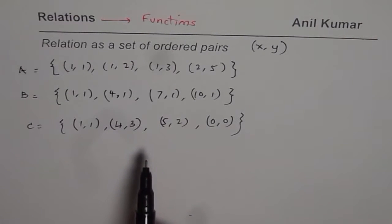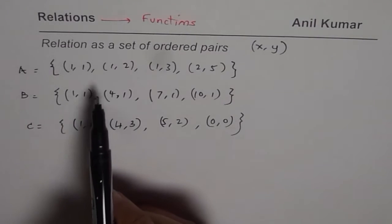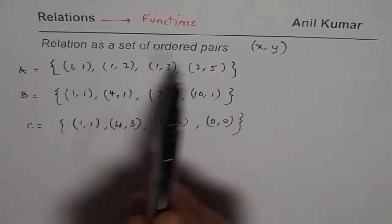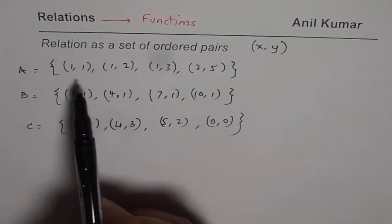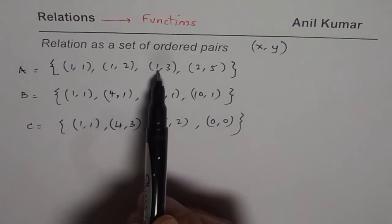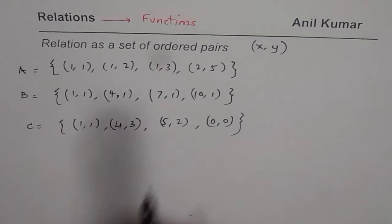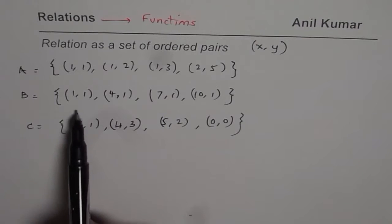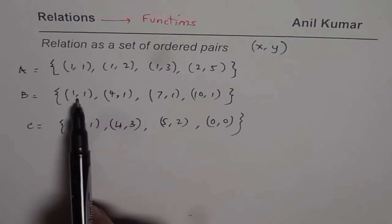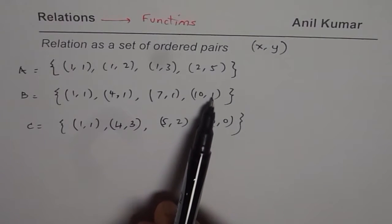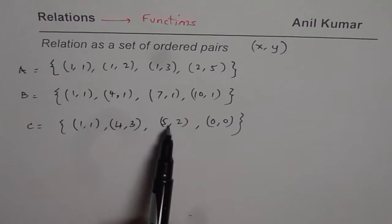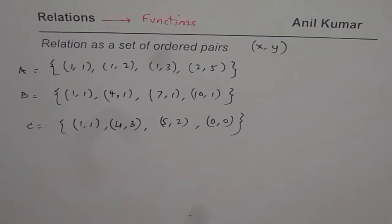Now all three are relations. We note that each element has an x and y — x is linked with y. In the first relation, 1 is related with 1, 1 is also related with 2, 1 is also related with 3, and 2 is related with 5. In the second relation, all the inputs — these x values represent the inputs — are related with one output, which is 1. And in the last case, we have a 1-to-1 relation where each input is uniquely related with an output.